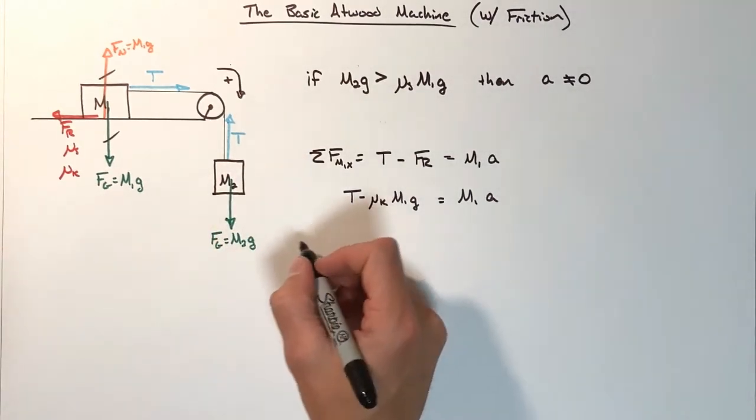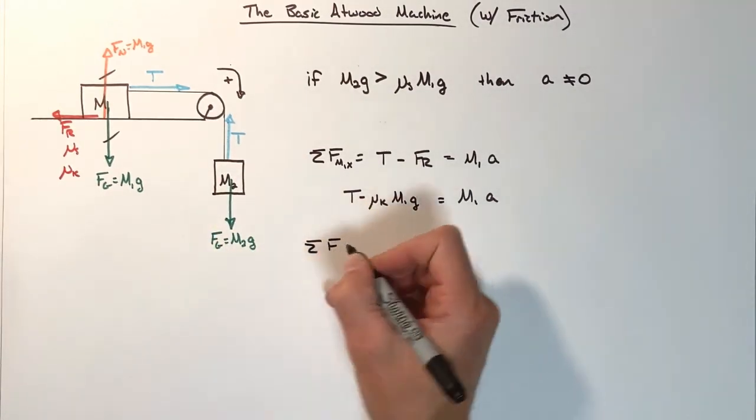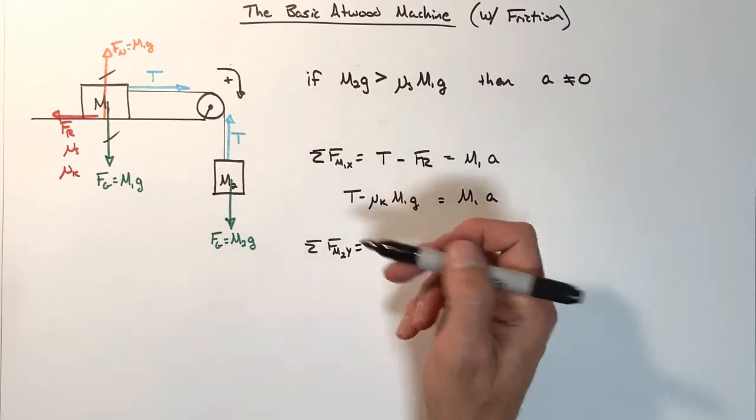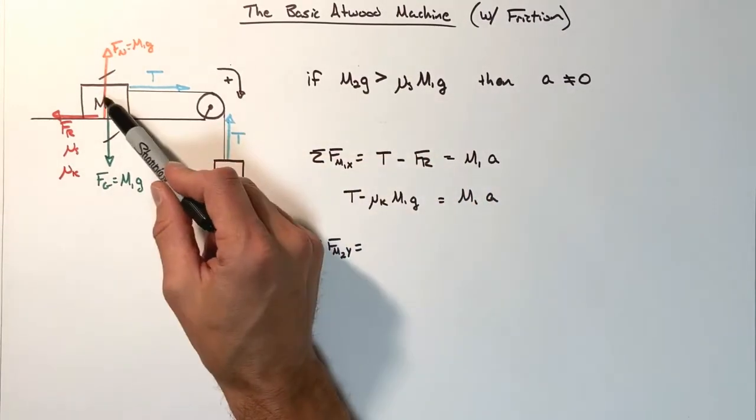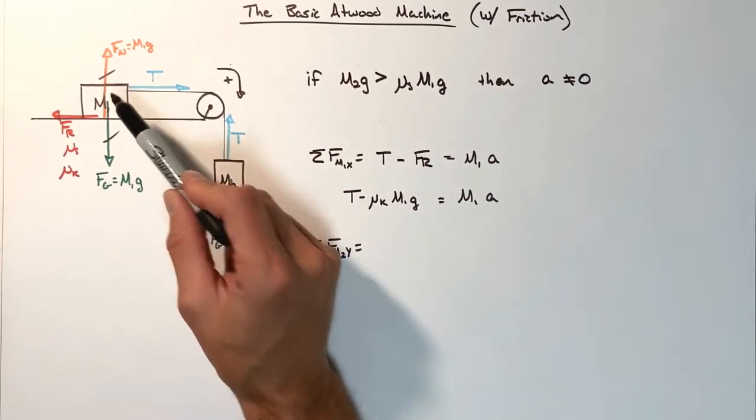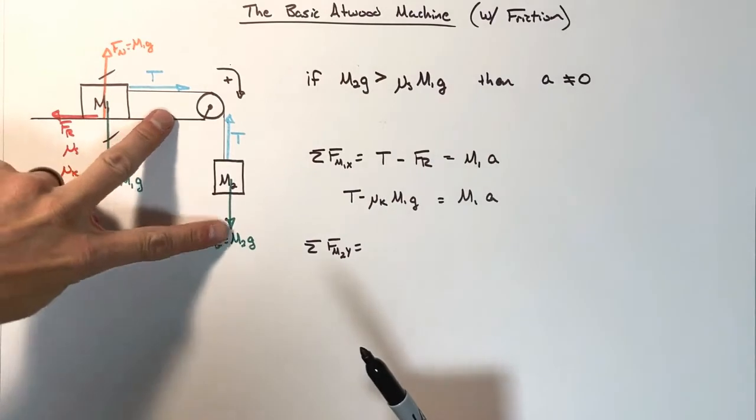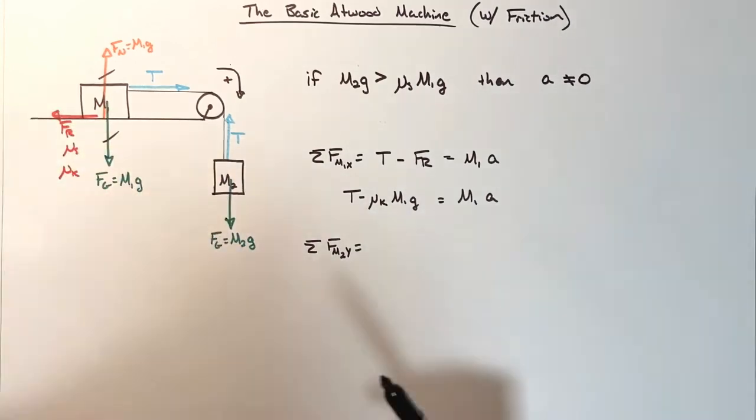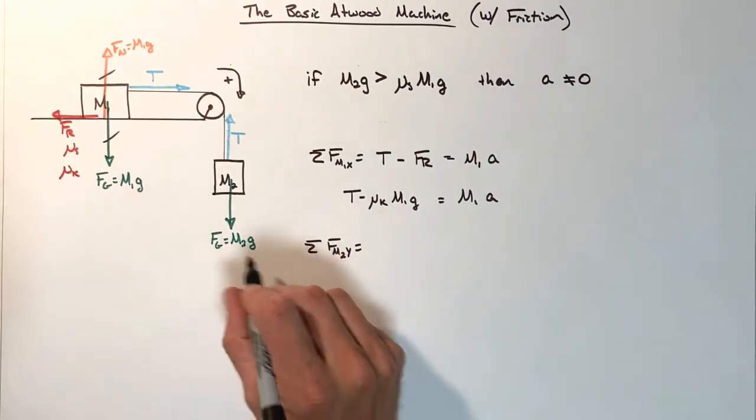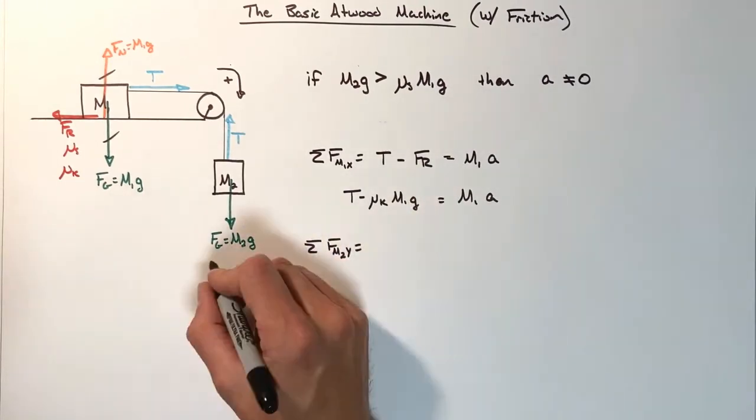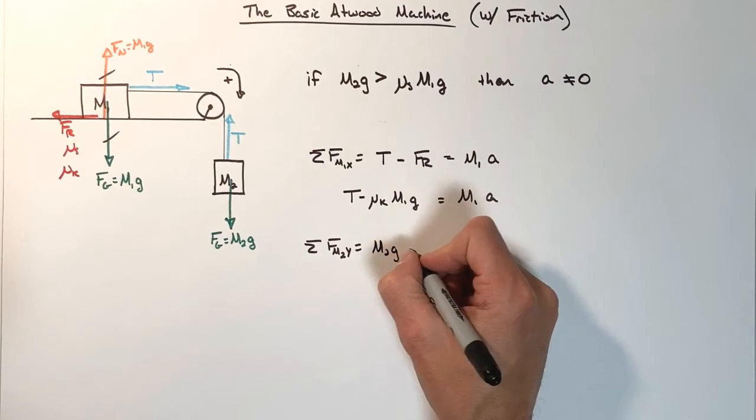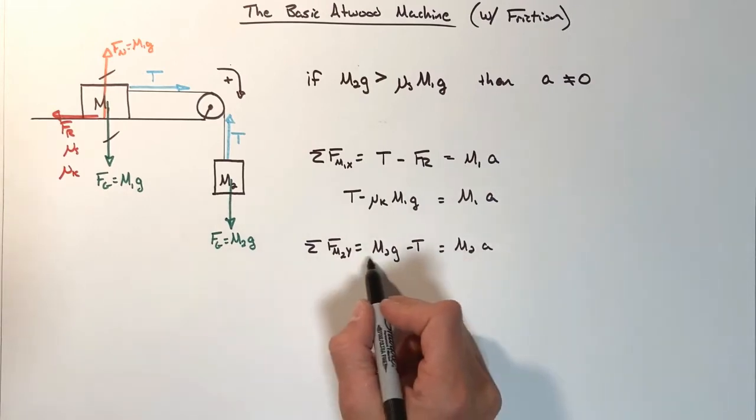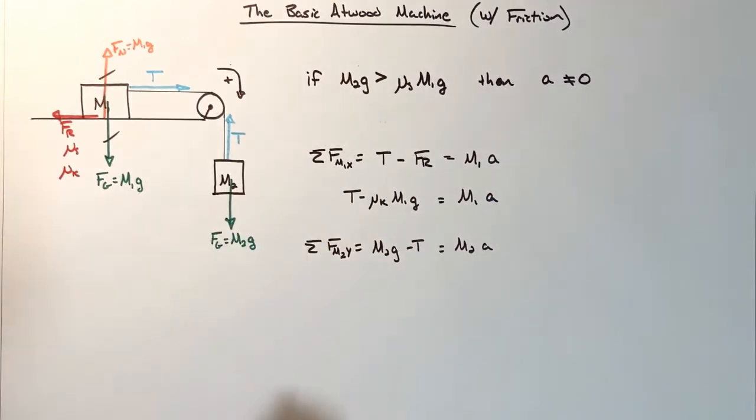Next, we're going to look at this block over here, our hanging block. We're going to look at the sum of all forces in block 2 in the y-axis. Now remember, we chose down as positive here, and that's consistent with forward or to the right being positive with this block. These two blocks need to move in tandem with each other. As this one moves right, this one must move down. So, keeping in mind our positive direction here is actually downward, we're going to have the weight of the block, that's M2G minus T, equals M2A. Again, we've simply set up Newton's second law and applied it to block 2.